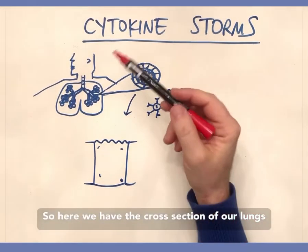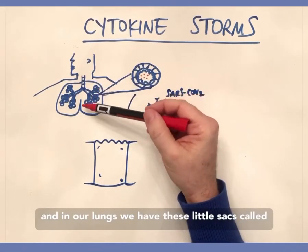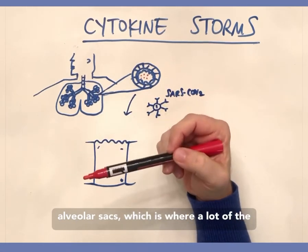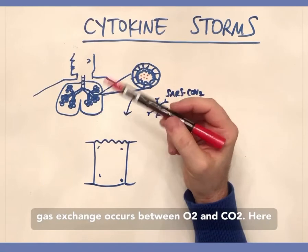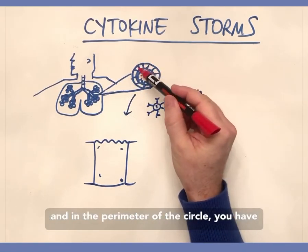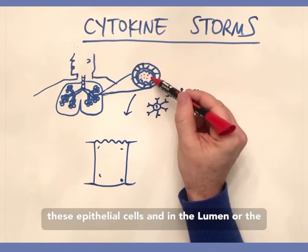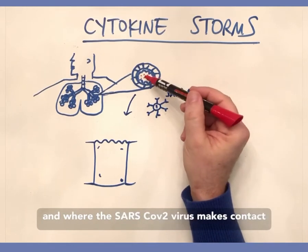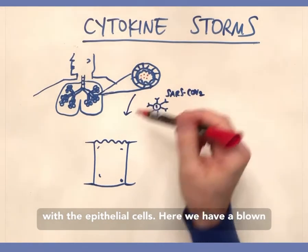Here we have a cross-section of our lungs. In our lungs we have these little sacs called alveolar sacs, which is where a lot of the gas exchange occurs between O2 and CO2. Here we have a cross-section of one of those alveoli, and in the perimeter of the circle you have epithelial cells. In the lumen, or the center, is where oxygen exchange happens and where the SARS-CoV-2 virus makes contact with epithelial cells.